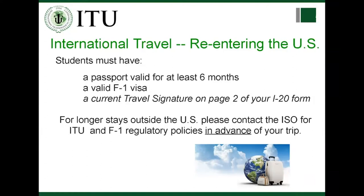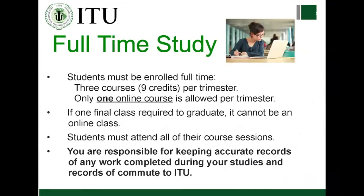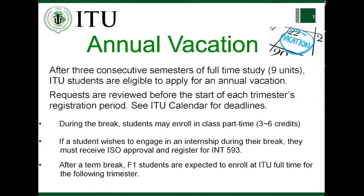For full-time study, F1 students must be enrolled in a full-time course load — nine credits per trimester, usually three courses. Only one online course is allowed per trimester. If you have only one final class to graduate, it cannot be an online class. You must attend all course sessions because attendance is mandatory. You are also responsible for keeping accurate records of any work completed during your studies — homework, coursework, tests — any kind of coursework you take in your classes.